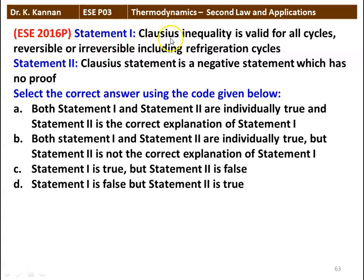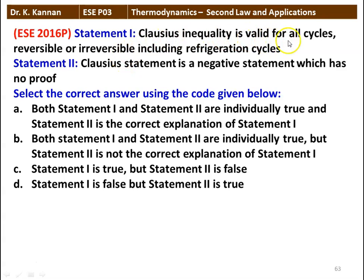Next question, a similar type: Statement 1: Clausius inequality is valid for all cycles, reversible or irreversible, including refrigeration cycles. Statement 2: Clausius statement is a negative statement which has no proof. The options are: both true and Statement 2 explains Statement 1; both true but Statement 2 does not explain Statement 1; Statement 1 true and Statement 2 false; Statement 1 false and Statement 2 true. Statement 1 is true. Clausius inequality is valid for all cycles. Statement 2 is false — the Clausius statement is not a negative statement and it does have a proof. So the answer is: Statement 1 is true and Statement 2 is false.